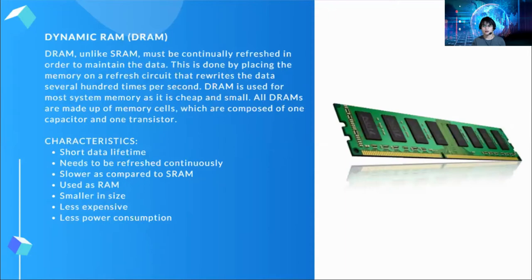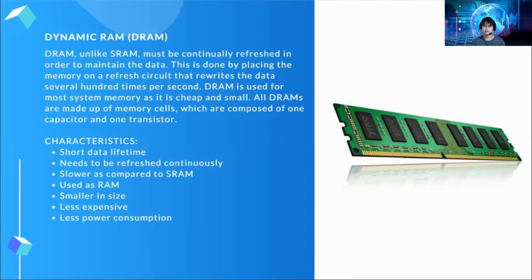Dynamic RAM, unlike SRAM, must be continually refreshed in order to maintain the data. This is done by placing the memory on a refresh circuit that rewrites the data several hundred times per second. DRAM is used for most system memory as it is cheap and small. All dynamic RAMs are made up of memory cells composed of one capacitor and one transistor. Characteristics of DRAM: it has a short data lifetime, needs to be refreshed continuously, is slower than SRAM, is used as RAM, is smaller in size, less expensive, and has less power consumption.